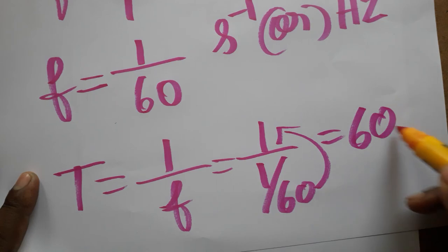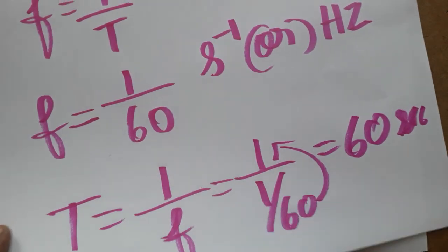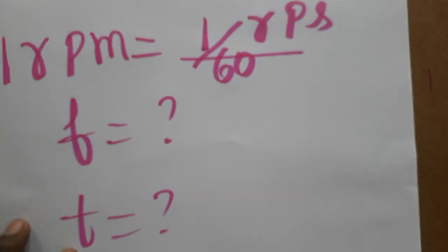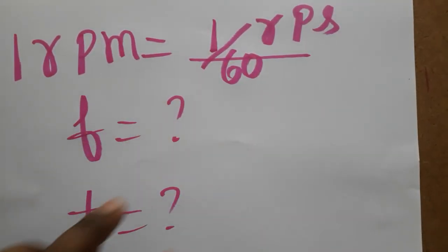Time taken for 1 rotation is 60 seconds. Vibration produced in 1 minute is 1 by 60 RPS. So this is the meaning of RPM - from RPM we got the frequency and time period.